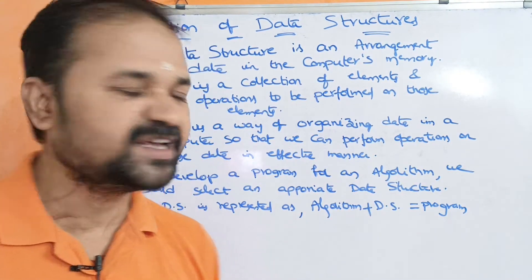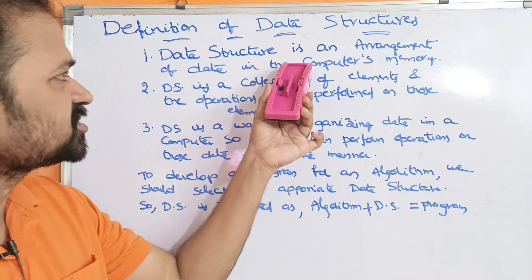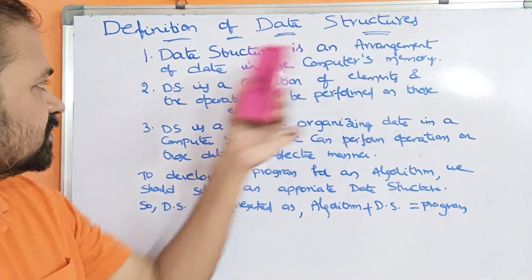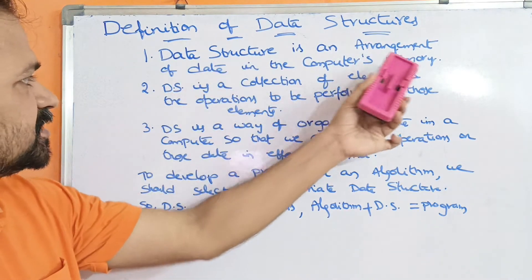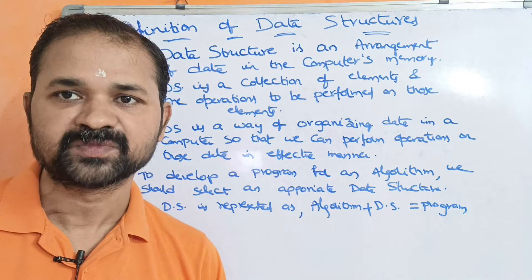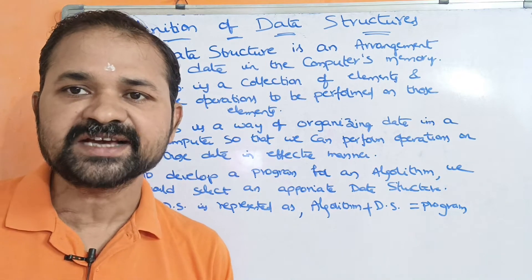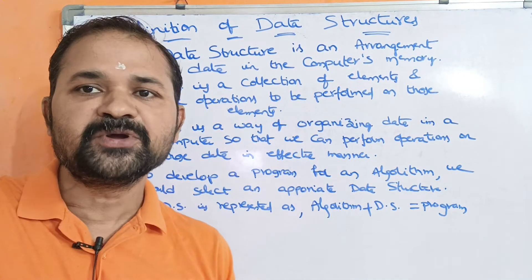The first definition is: data structure is an arrangement of data in the computer's memory.